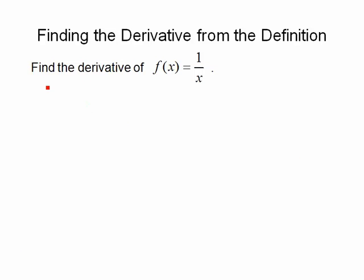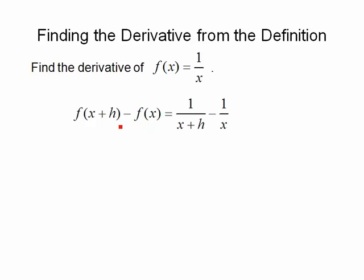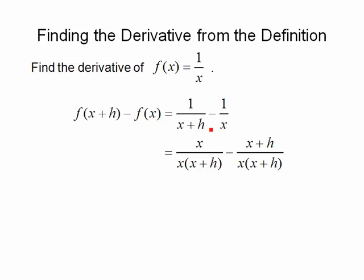Let's do another one and follow those steps. Let's find the derivative of f of x equals 1 over x. First, we figure out f of x plus h, so in place of x we put the quantity x plus h, giving us 1 over x plus h. Step 2, we form f of x plus h minus f of x, which is 1 over x plus h minus 1 over x. We can combine these two fractions by getting a common denominator of x times x plus h.